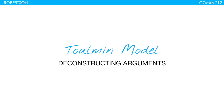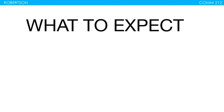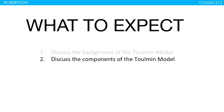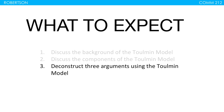Let's discuss the Toulmin model. This is a tool for deconstructing arguments so you can better understand what's going on when someone is trying to make and create an argument. What you can expect here is first we're going to discuss the background of the Toulmin model and some of its origins and author. After that we're going to discuss the components of the Toulmin model and then we're going to deconstruct three different arguments using the Toulmin model.